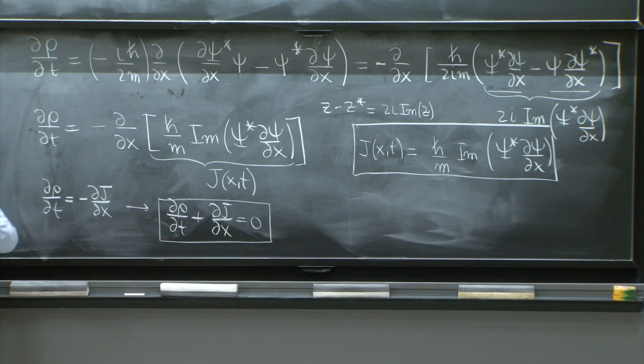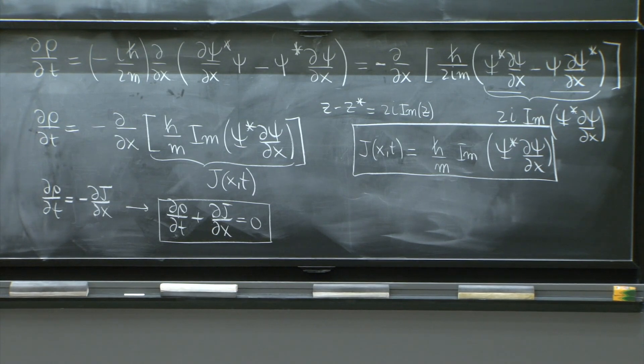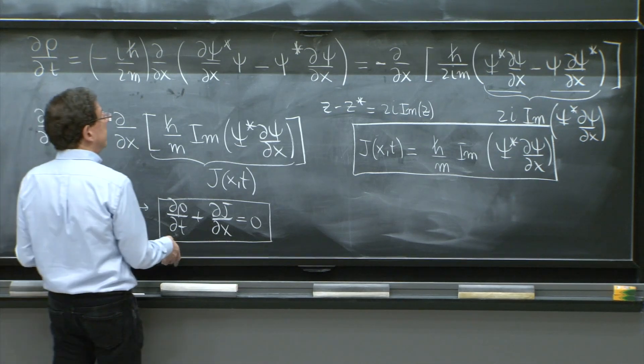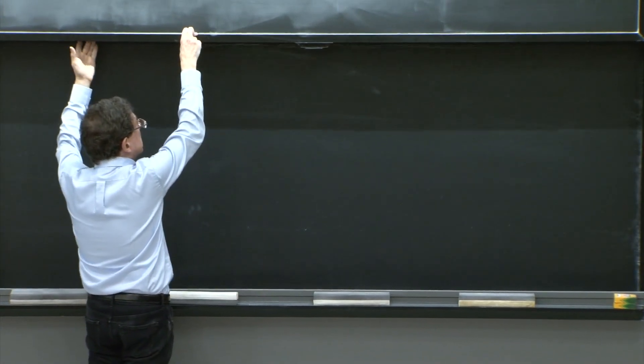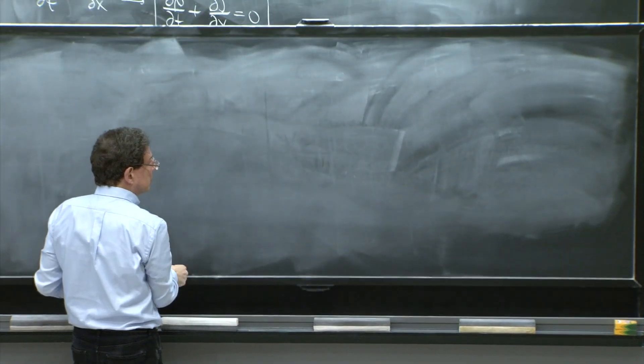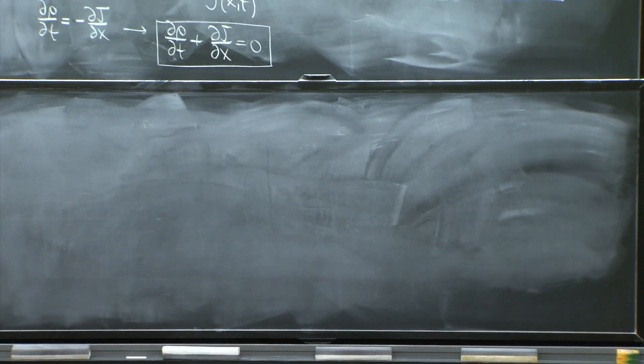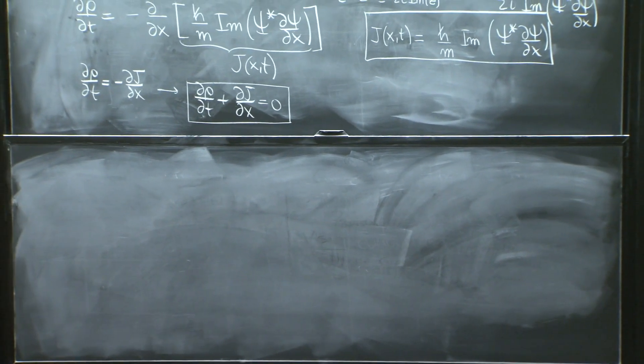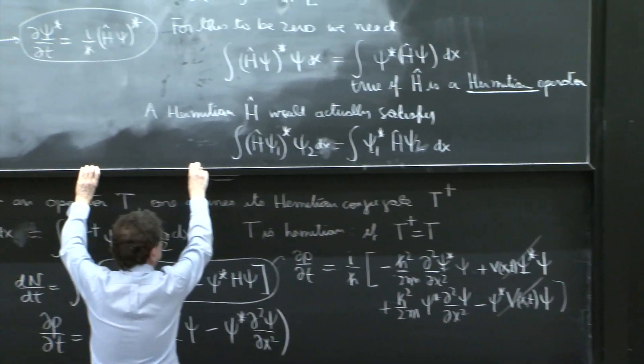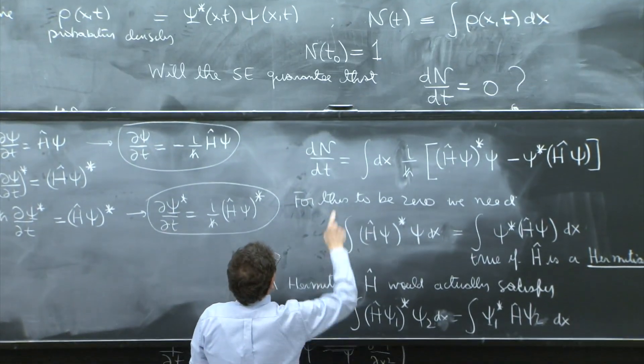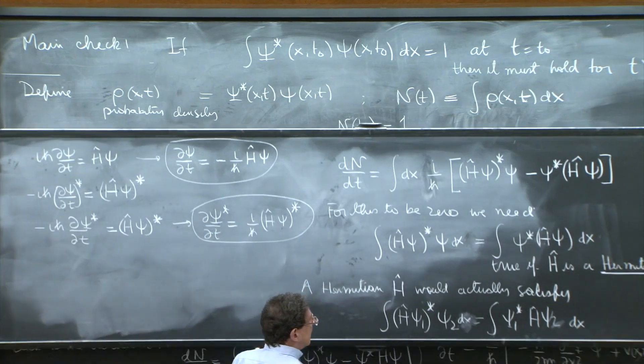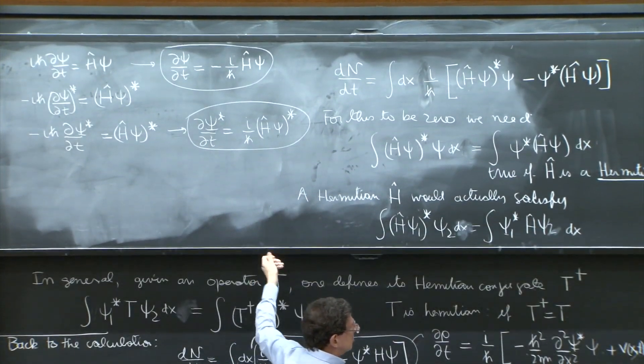Now, this is called current conservation. You've seen it before in electromagnetism. And we'll review it here in a second, as well. So look what has happened. You began with the introduction of a charge density, which was a probability density. But you were led, now, to the existence of a current.